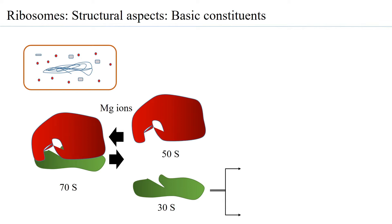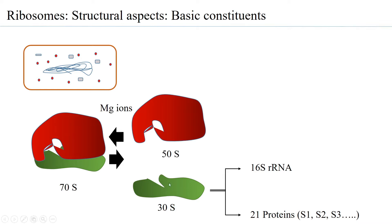Looking in more detail at what the individual subunits of the ribosome are made of — let us begin with the small subunit, referred to as 30S in the prokaryotic system. The 30S comprises 21 proteins, and since these proteins are present in the small subunit, they are referred to as S1, S2, S3, and so on — the S standing for small subunit. The other constituent that makes up the 30S is the 16S ribosomal RNA. The 16S rRNA and the 21 proteins together comprise what is called the small subunit. Therefore, effectively, a ribosome is a ribonucleoprotein.